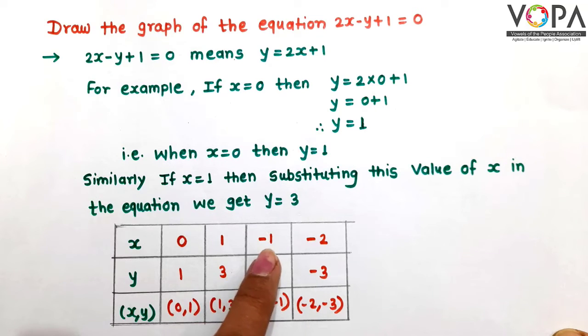When we put x is equal to minus 1 in the given equation, then we get y is equal to minus 1. Therefore, the point is (-1, -1).